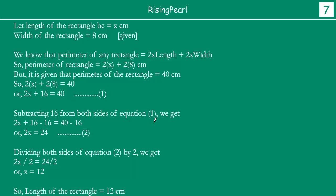Now subtracting 16 from both sides of equation 1, we get 2x plus 16 minus 16 equals 40 minus 16, so 2x equals 24. This is equation 2. Dividing both sides of equation 2 by 2, we get 2x divided by 2 equals 24 divided by 2, or x equals 12. So length of the rectangle is equal to 12 centimeters.